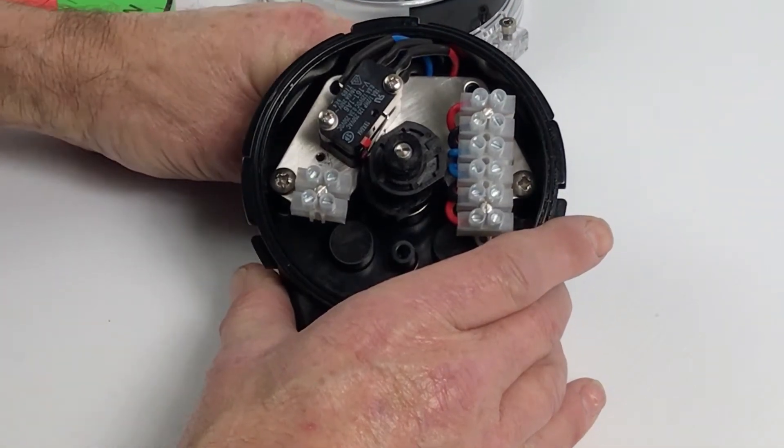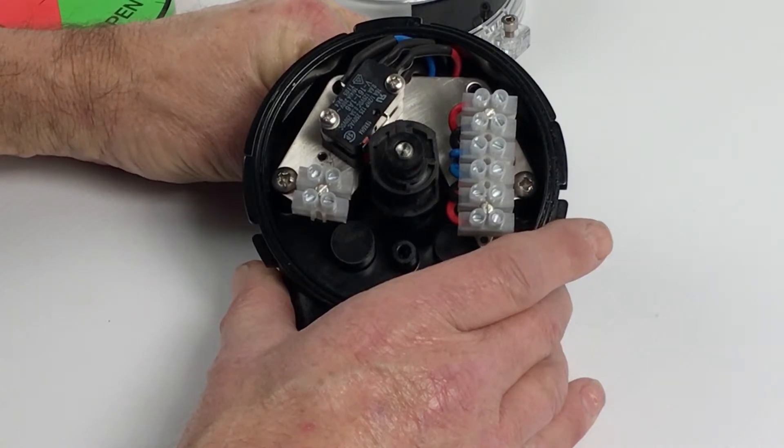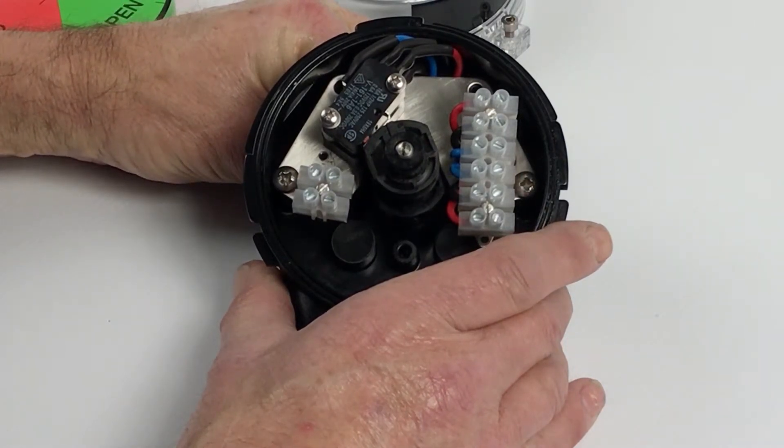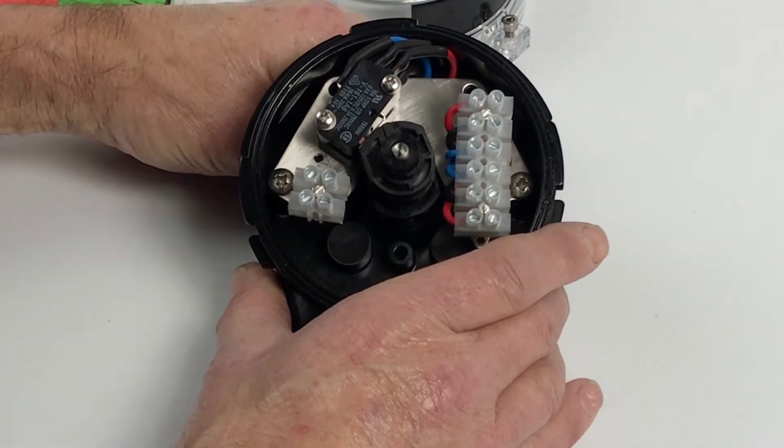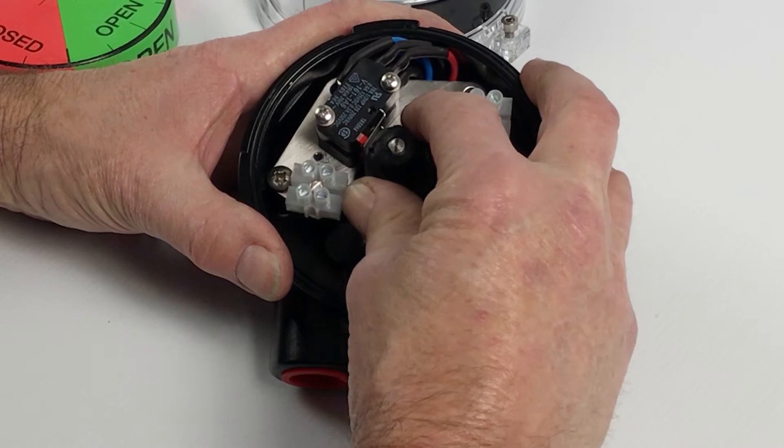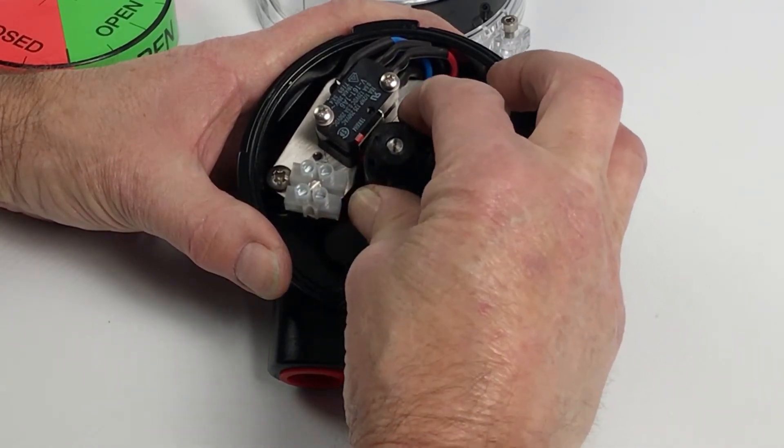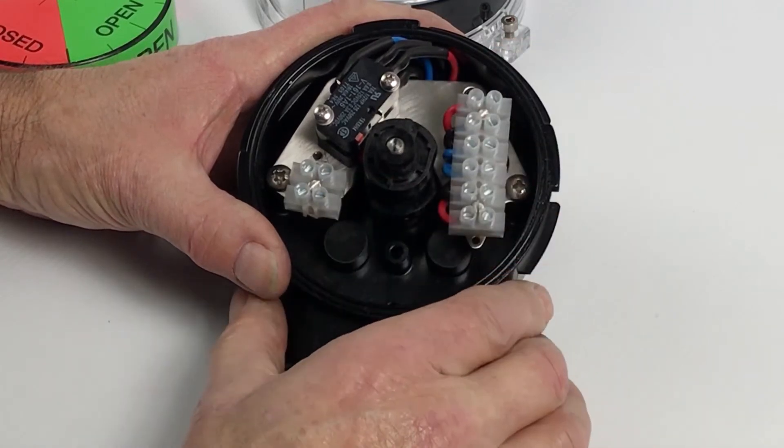We would rotate the position to the open position, which has gone counterclockwise. At this point, we would then push this down, turn it clockwise then counterclockwise until the switch just triggers, and then pull it back up on the spline.